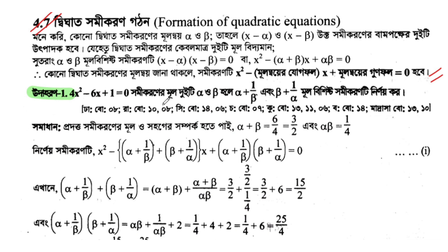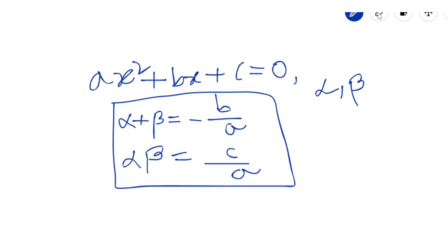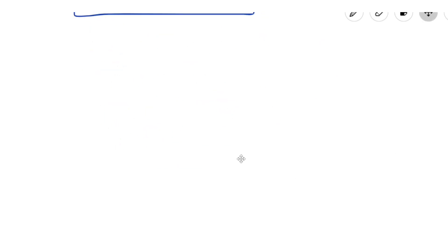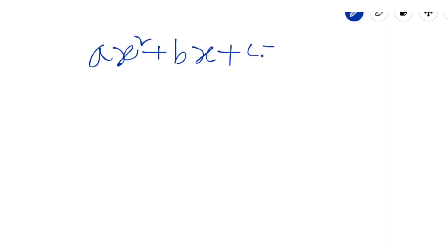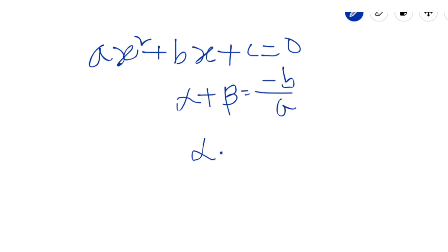Now for the equation x² + bx + c = 0, the key formulas are: alpha plus beta equals -b/a, and alpha times beta equals c/a. We will now apply these formulas to solve a specific problem. Keep these formulas in mind as they are fundamental tools.